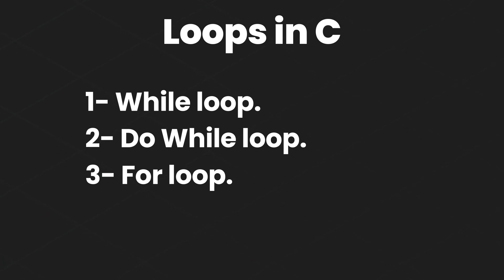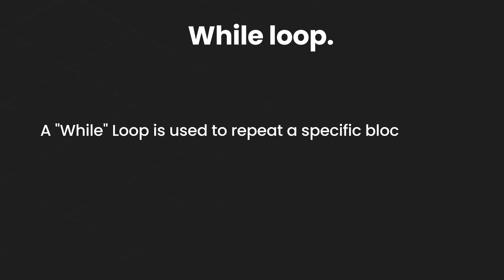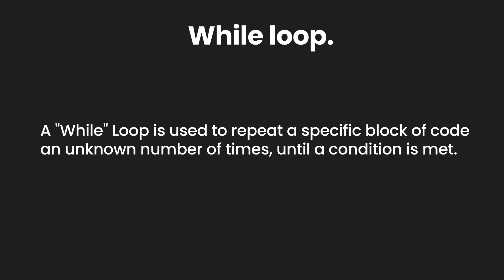We are going to explain all of these loops with examples, so stick around to get a better understanding of how to work with loops in C programming language. The most basic loop of all is the while loop, which is used to run a certain block of code while a certain condition holds true.